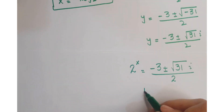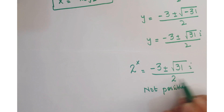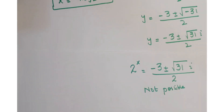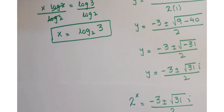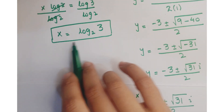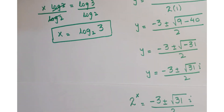Since the discriminant is negative, 2 to the power x equals minus 3 plus or minus root 31 upon 2 is not possible because the value of x cannot be calculated here. So the required solution is x equals log of 3 to the base 2.